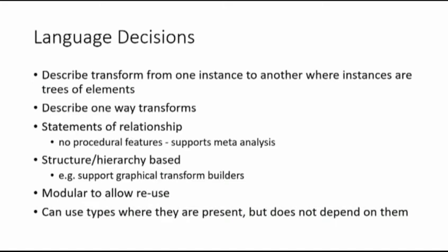We describe one-way transforms, not two-way transforms. In simple cases where you have the same elements on both sides with different names, a one-way transform is essentially invertible. But when you start getting complicated things — mapping subsets, handling unmappable items, restructuring data in both directions simultaneously — it rapidly spins out of control. So we decided to make them separate: two separate one-way transforms.